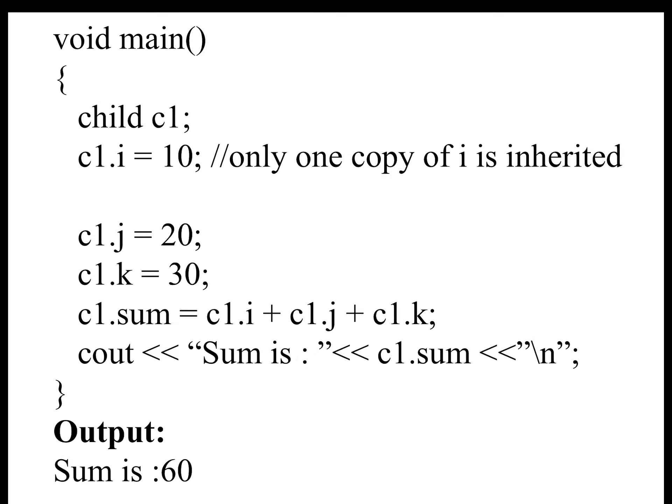In the main part, when we write c1.i = 10, only one copy of i is inherited. Even though there are two paths — Parent1 and Parent2 — only one copy is shared. This is the main use of the Virtual Base Class: when declared virtual, it shares only a single copy of that class to avoid ambiguities. Then c1.j = 20, c1.k = 30, and finally c1.sum = c1.i + c1.j + c1.k, which displays the sum as 60.